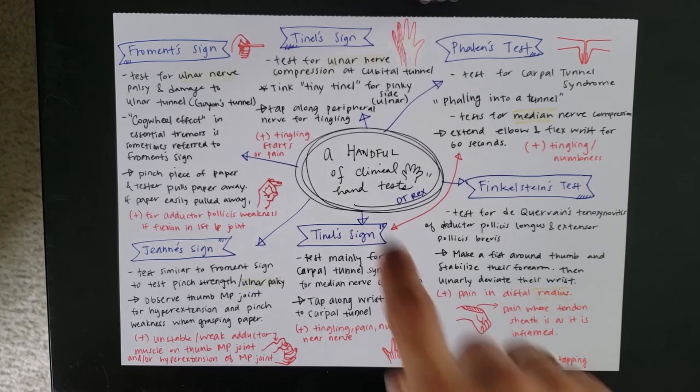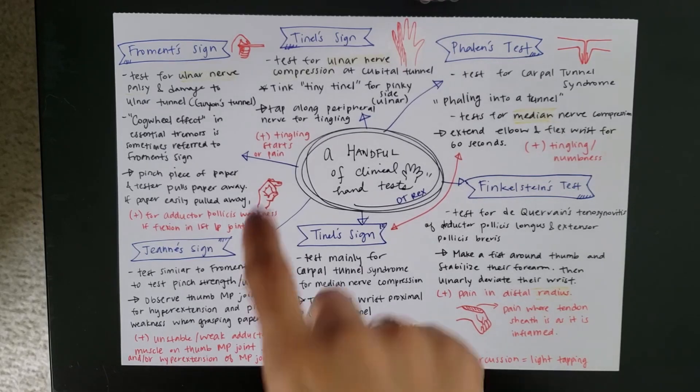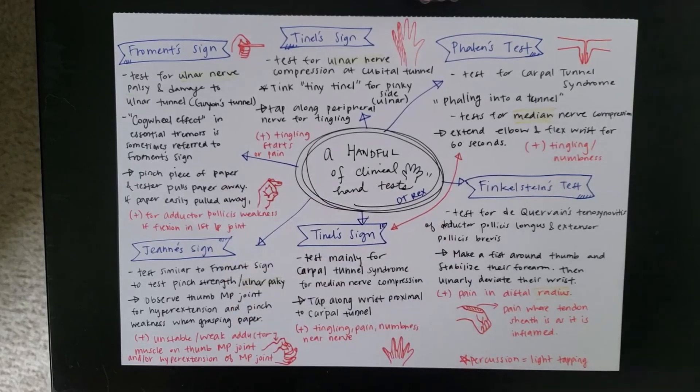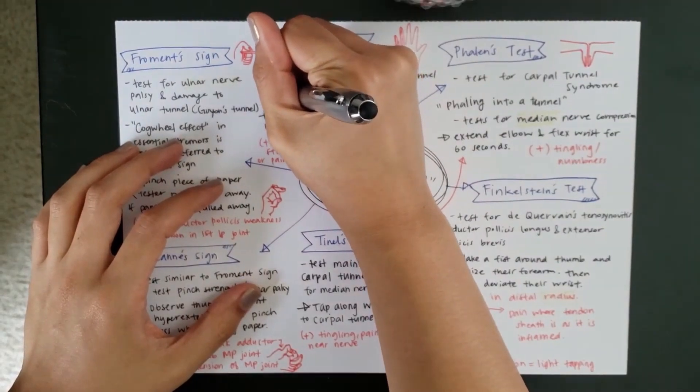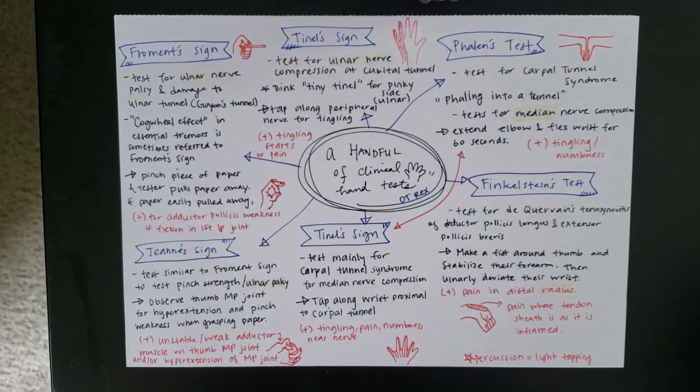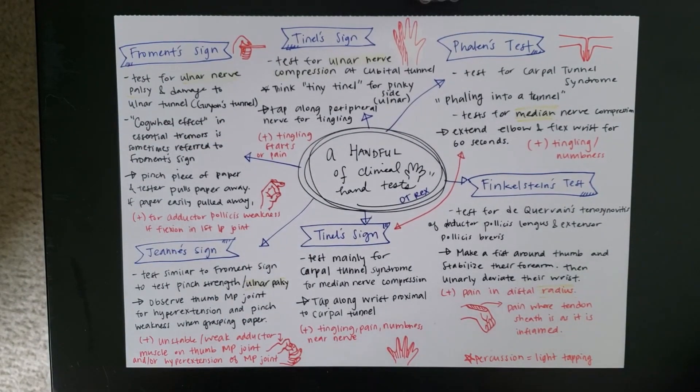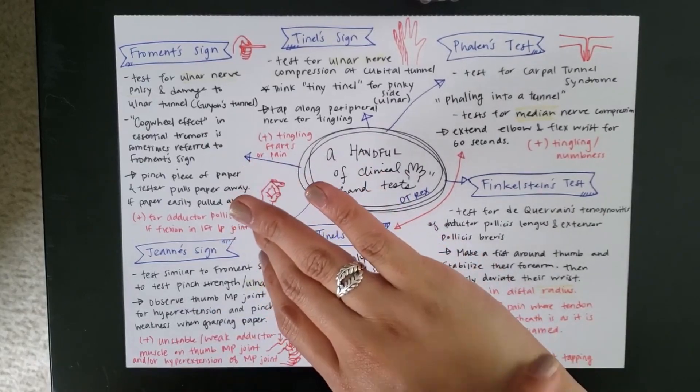You can also test for ulnar nerve compression at the cubital tunnel. And I know this is kind of confusing since Tinel can be used for two different things. Oh, I forgot an H there. I must have been writing too quickly. Gotta fix that. So, think tiny Tinel for the pinky side. So, if it says that you are trying to do an ulnar nerve test, then you can think tiny Tinel for the pinky side, which is the ulnar side.